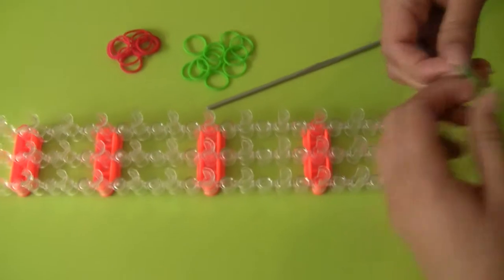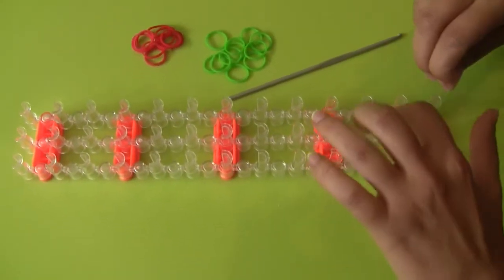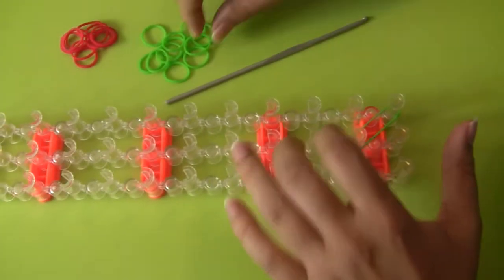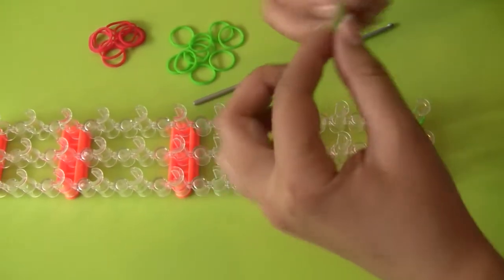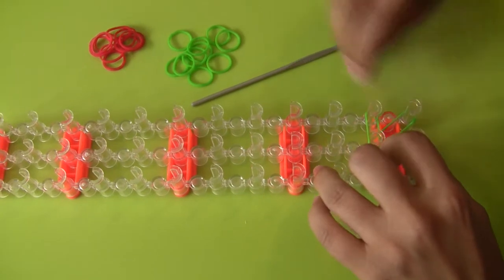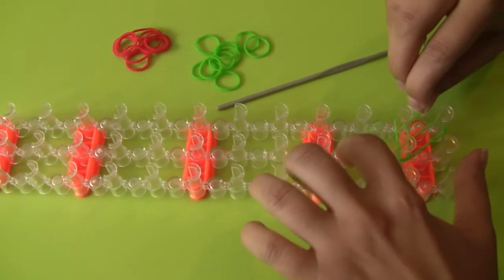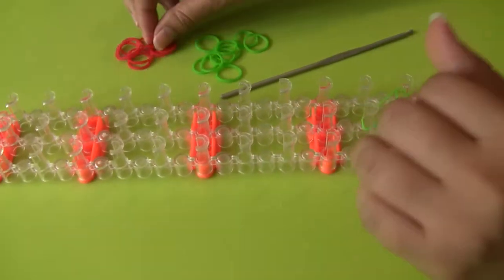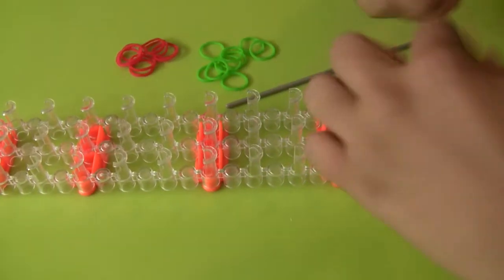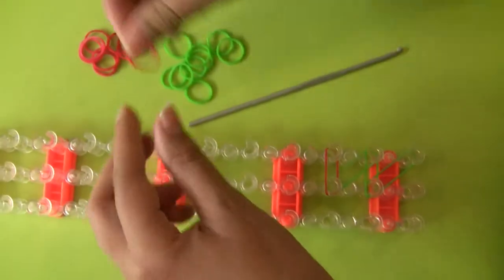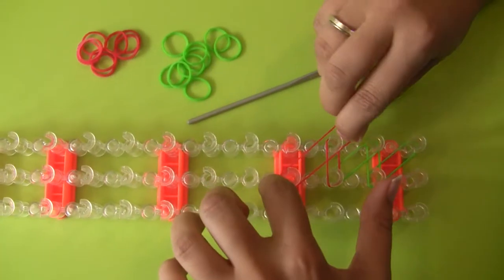Place 3 green bands on the loom board, then 3 red loom bands. I'll keep repeating these steps.